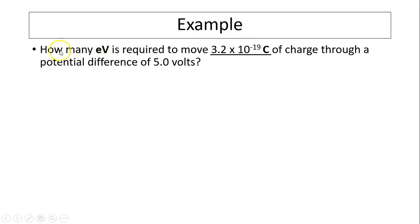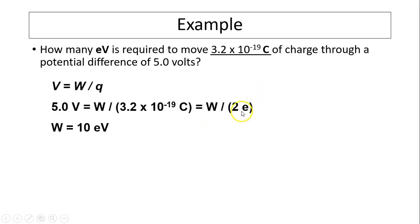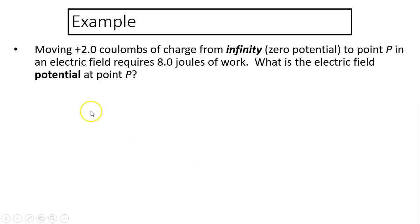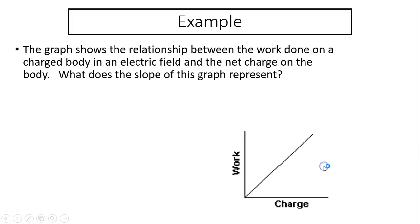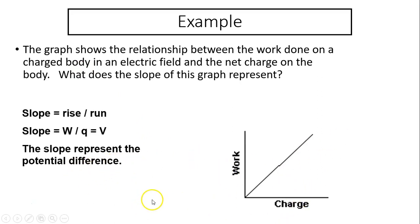How many eVs are required to move a given number of coulombs through a potential difference? Convert coulombs to elementary charges — that many coulombs equals 2 elementary charges, so the answer is 10 eV. Next: moving 2 coulombs from infinity — meaning from zero potential — to a point requires a certain amount of work. To find the potential, use V equals W over Q. Since potential at infinity is zero, V equals W over Q equals 4 volts. On a work-versus-charge graph, the slope equals the potential difference.